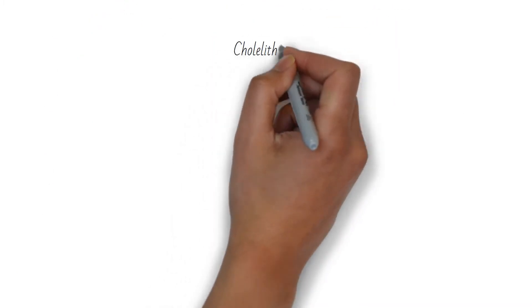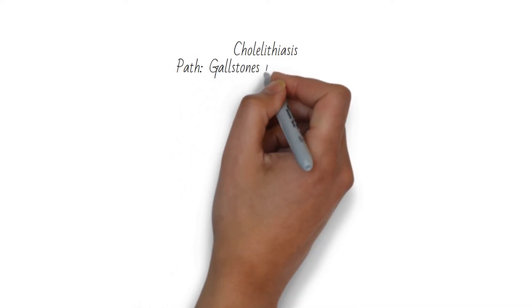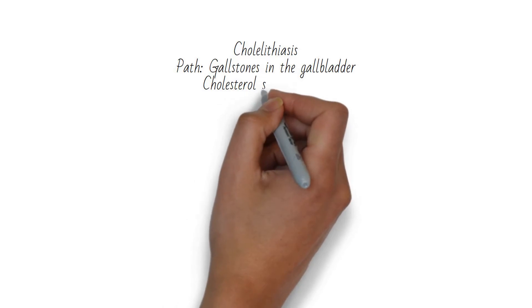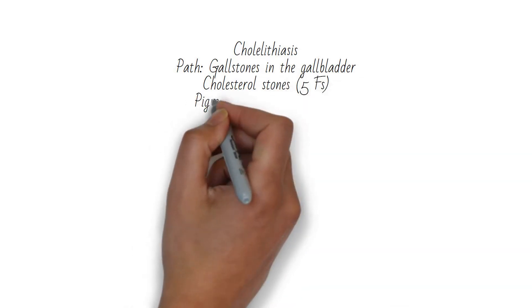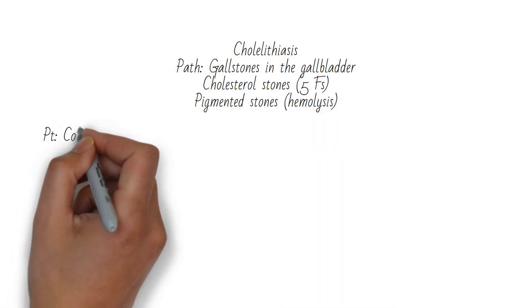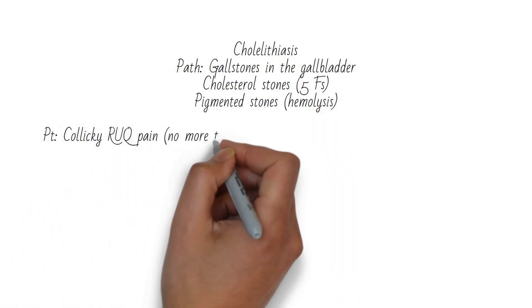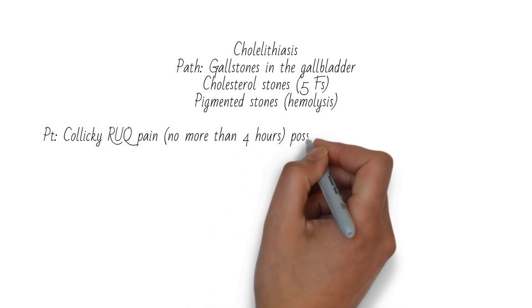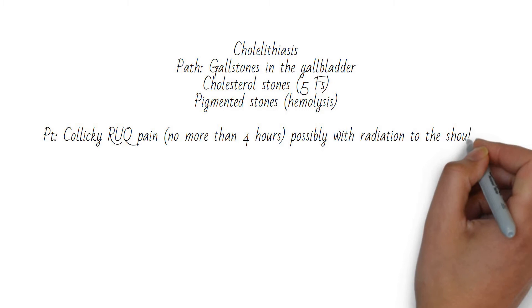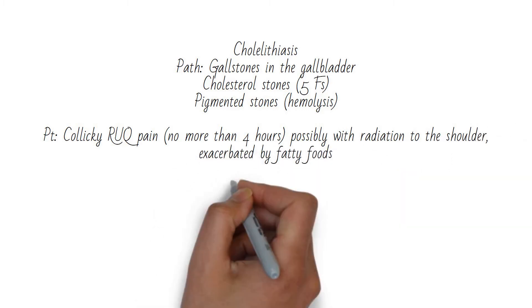Cholelithiasis is essentially just gallstones in the gallbladder. It can be symptomatic or asymptomatic and results from yellow cholesterol stones, common in people with the 5 F's, or pigmented stones, common in chronic hemolyzers such as patients with sickle cell or spherocytosis. The symptomatic patient will have colicky right upper quadrant abdominal pain for no more than about 4 hours. The pain may radiate to the shoulder and may be preceded by a fatty meal. They may also have nausea and vomiting.